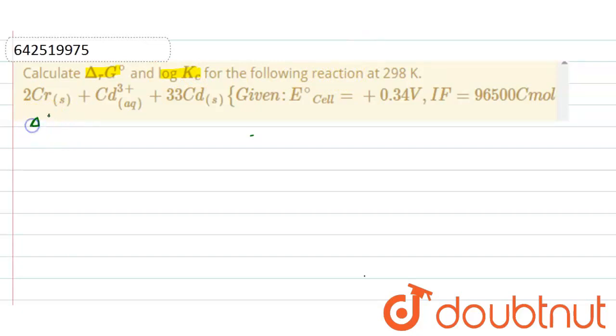As we know, delta G equals minus N F E0 cell. Faraday is given, E0 cell is also given, but N is not given. So we will find the N factor from this reaction.